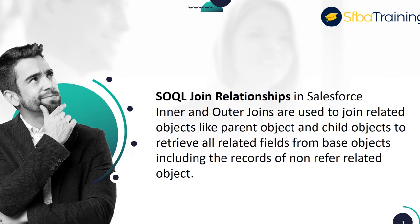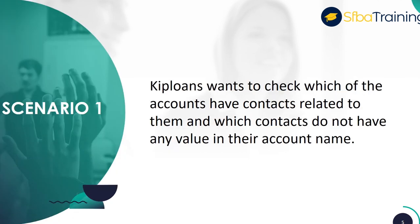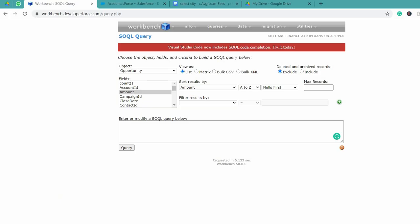Let's solve some sample scenarios. Scenario 1: KIP Loans wants to check which accounts have contacts related to them and which contacts do not have any value in their account name. We will be writing a query using relationships between objects.